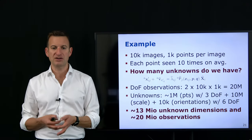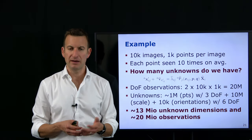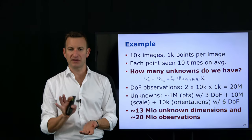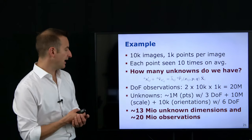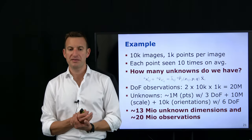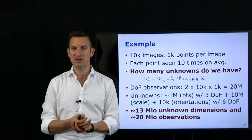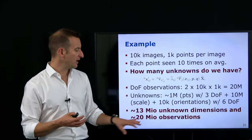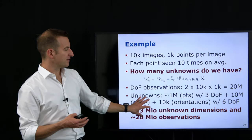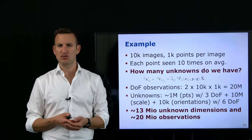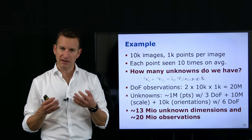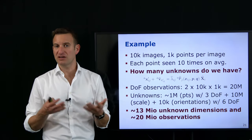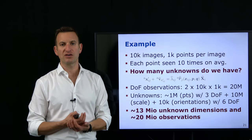Looking at this equation and the unknowns, there is one quantity I'm actually not really interested in — the scale parameter. I need it because I've expressed everything in homogeneous coordinates where every homogeneous object is only defined up to a scale factor. But in practice I'm not interested in the scale factor — in the end I want the x, y, z Euclidean coordinates of my point and the 3D location and rotation vectors for my camera. So this is the point where we should move back from the homogeneous world into the Euclidean world.